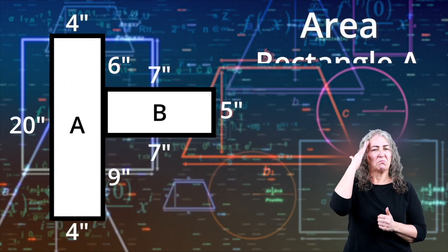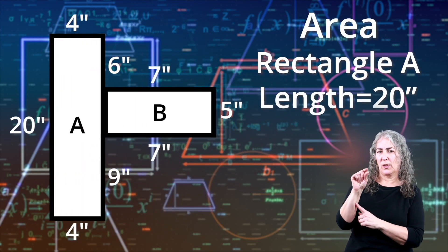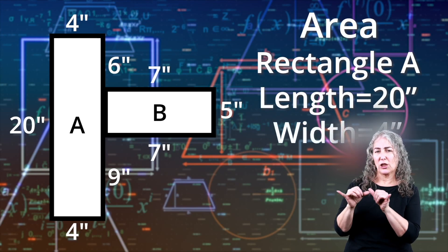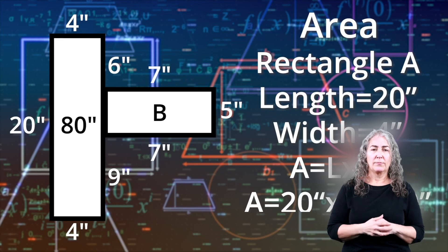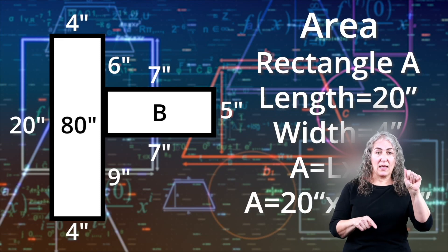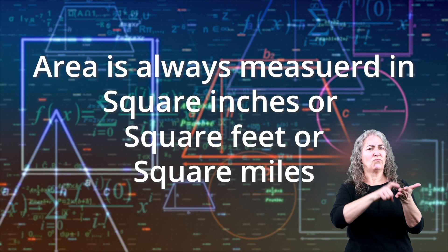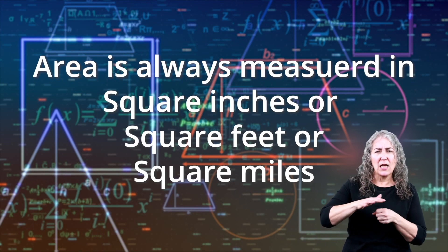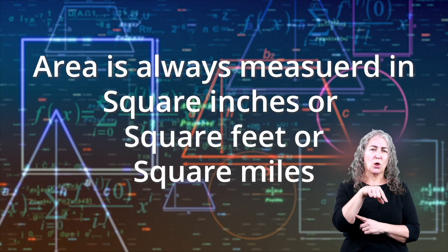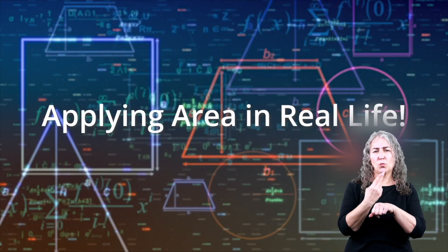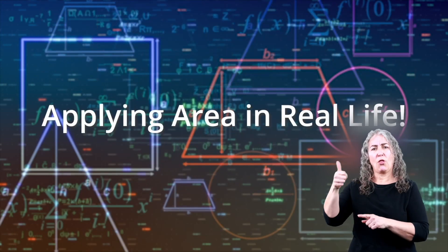We know the length of rectangle A is 20 inches and its width is 4 inches. Since area equals length times width, the area of rectangle A is 80 square inches. By the way, you'll notice that area is always measured in square inches or square feet or square miles, depending on what units you're using. For more on that, refer to our other video called,